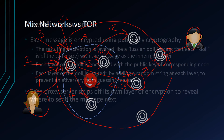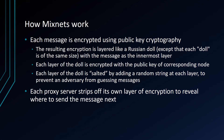So how do mix nets work? Each message is encrypted using public key cryptography. The resulting encryption is layered like a Russian doll, except each doll is the same size and the message is at the innermost layer — the message for Bob. Each layer of the doll is encrypted with the public key of the corresponding node. Additionally, each layer is salted by adding a random string at each layer to prevent the adversary from guessing messages, and this random string is discarded at the end of the day.